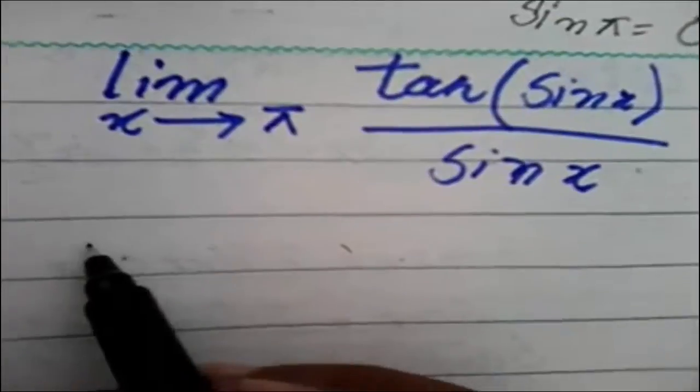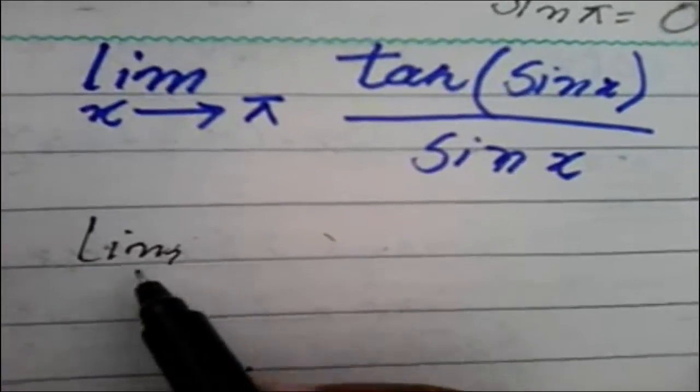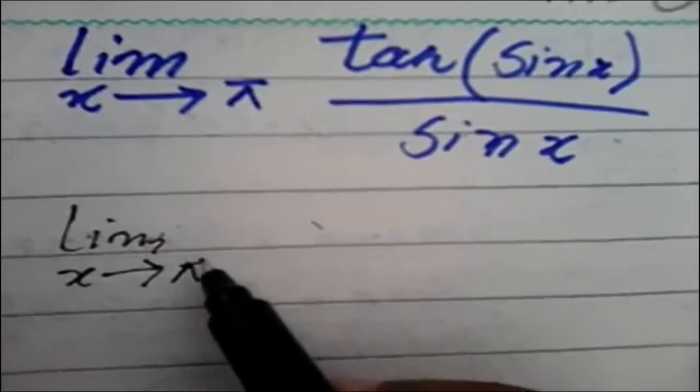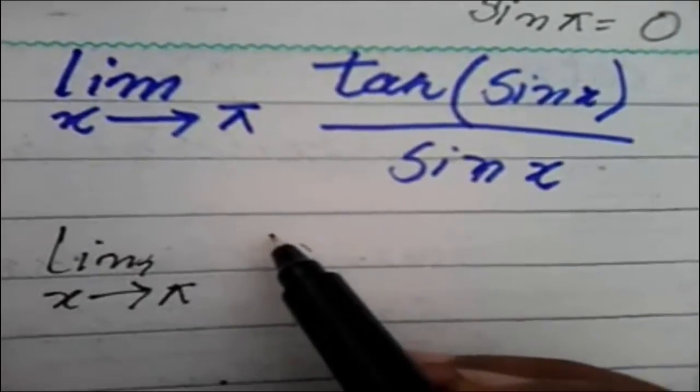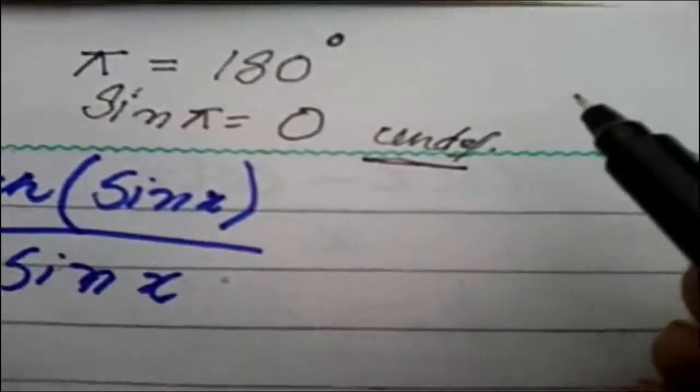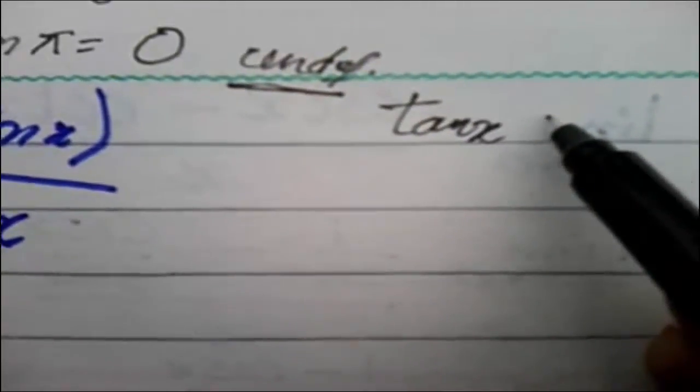Okay, write limit x tends to π. Then tan - do you know what tan is? Let's see, I will show you what is tan. Tan is equal to... trigonometric equation, tan have many formulas but I am using this: sin(x) over cos(x).